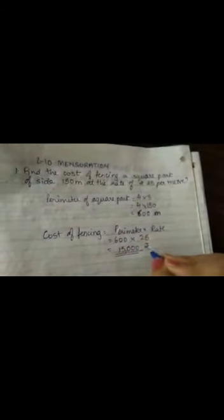6 fives are 30, carry 3. 6 twos are 12 plus 3, 15. So 15,000 rupees. So first to find the fencing that is the border we will find the perimeter and then we will find the cost by multiplying the perimeter by the rate.